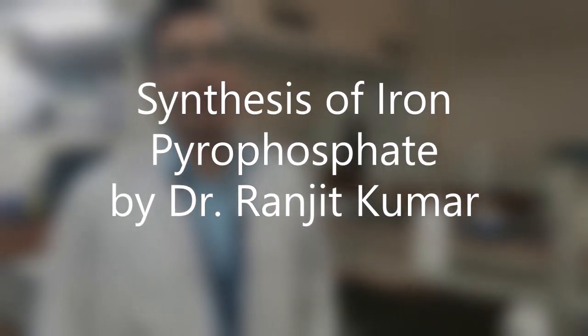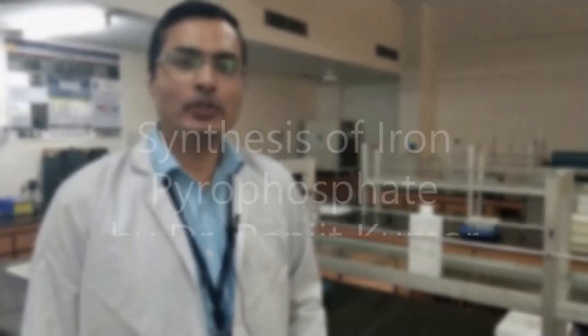As per one of our subscribers' demand, we are going to show you how to make iron pyrophosphate nanoparticles today. In order to make iron pyrophosphate nanoparticles, you will require iron chloride, sodium pyrophosphate, ethylene glycol, and distilled water. To begin with, first we need to make solutions and then we'll show you how to make iron pyrophosphate nanoparticles.